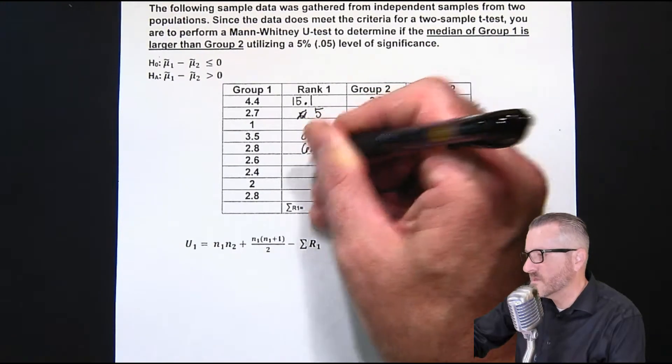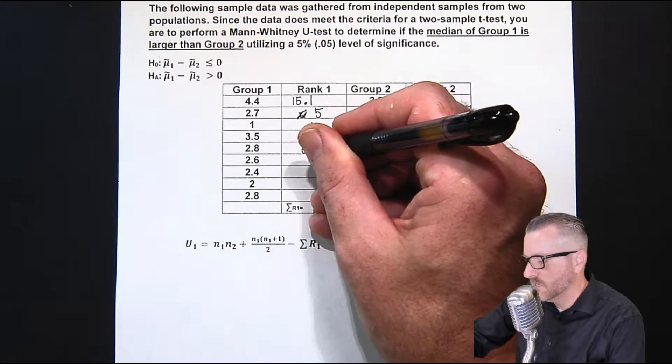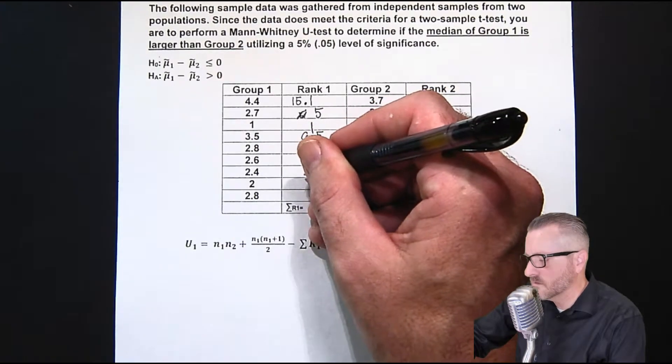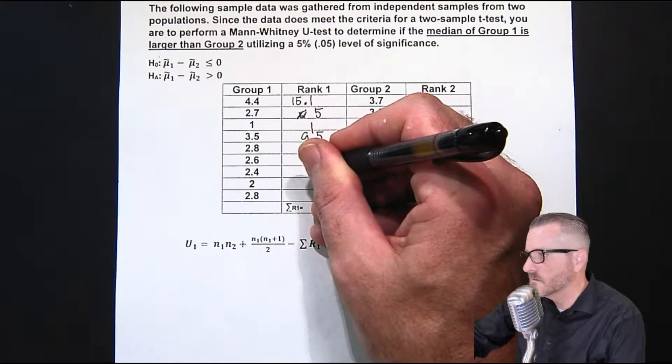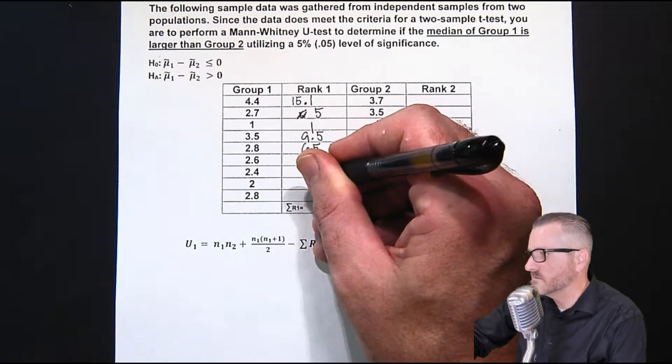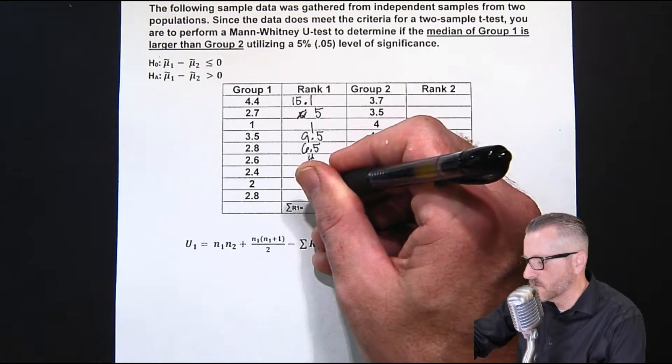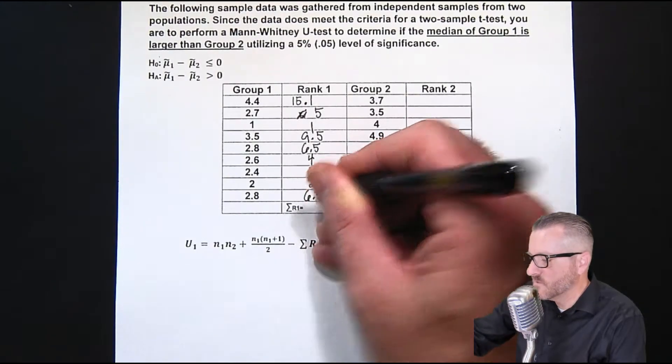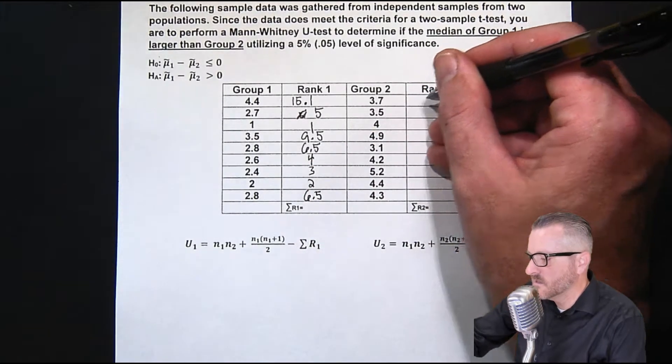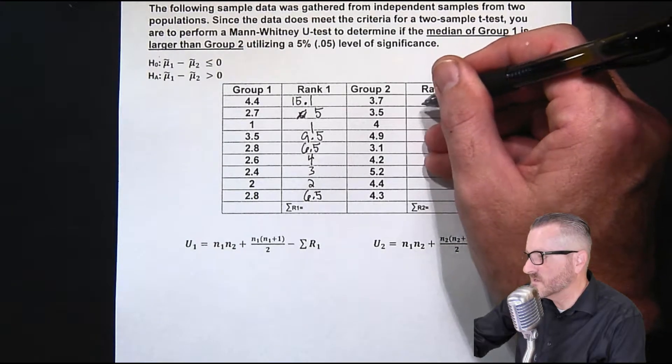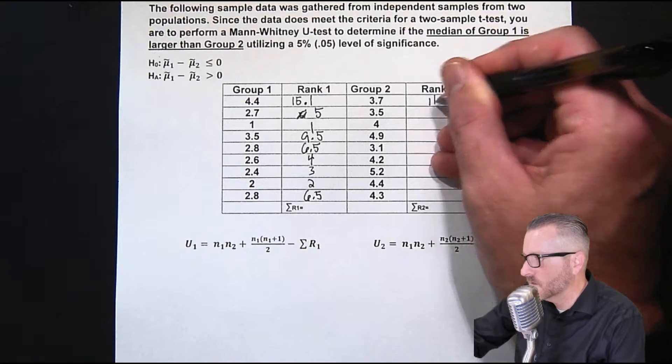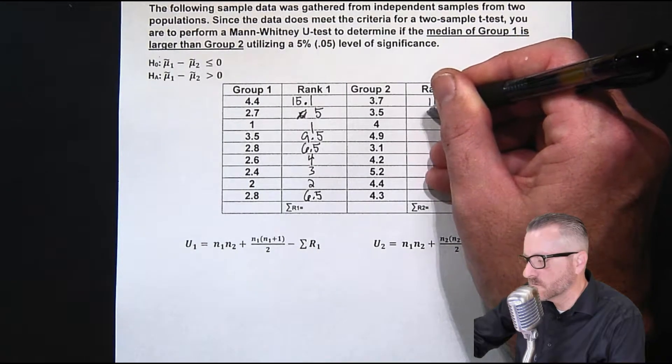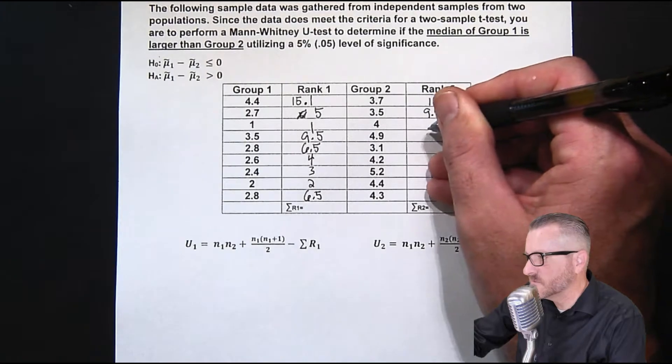So when we have ties, we treat them kind of like we calculate the median. Maybe I can't talk and do two things at the same time here. So if you remember when we calculate the median, if we have an equal number of data, then what we do is we get the average of the two.